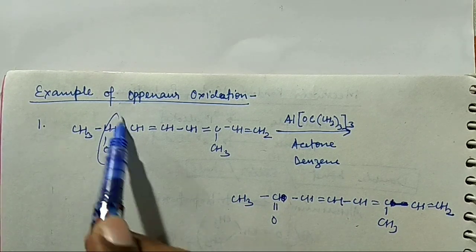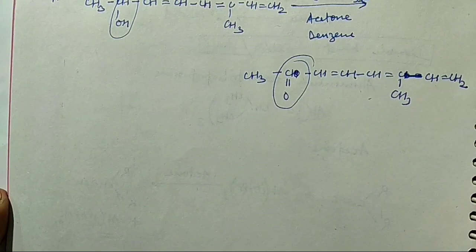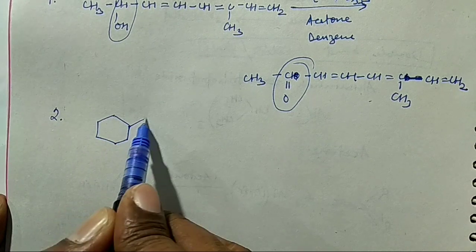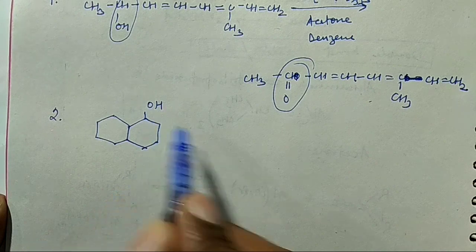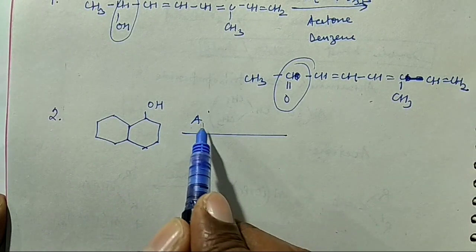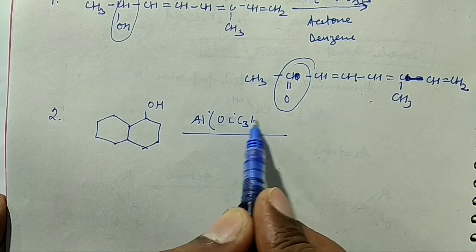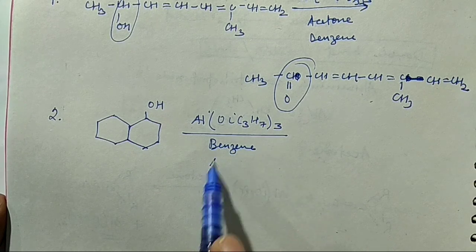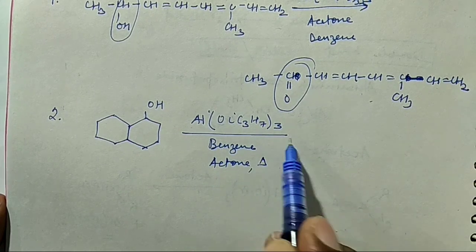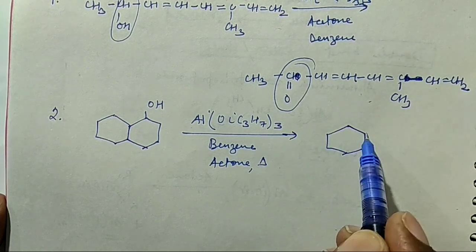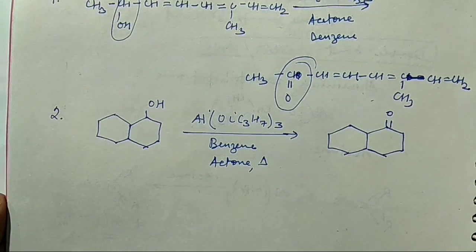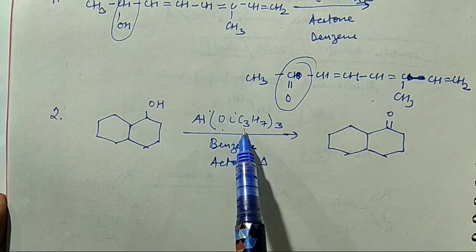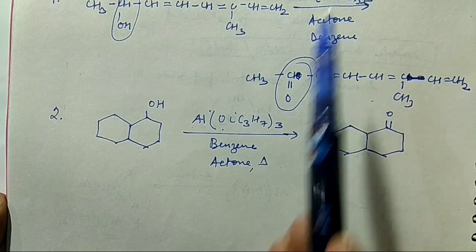The OH group is converted into a keto group. Example 2: A secondary alcohol with an OH group is treated with Aluminium Isopropoxide Al(OC₃H₇)₃, benzene, and acetone upon heating. We can use either Aluminium Tri-Isopropoxide or Aluminium Tri-Tertiary Butoxide.